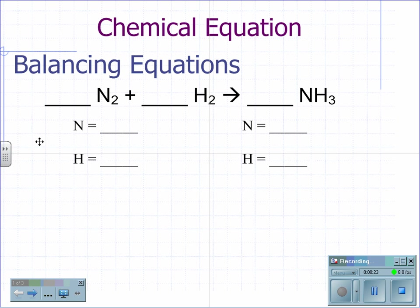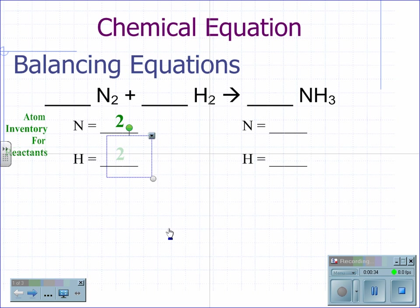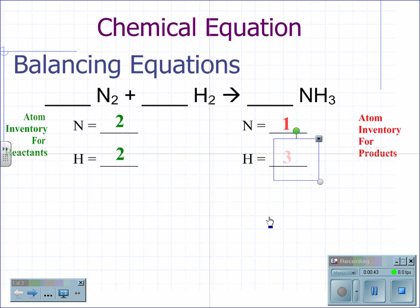The first thing you would like to do is do an atom inventory of the reactants. For the reactants, there are nitrogen and hydrogen atoms — two nitrogen and two hydrogen. We then do an atom inventory of the products. In ammonia, we have one nitrogen and three hydrogen.